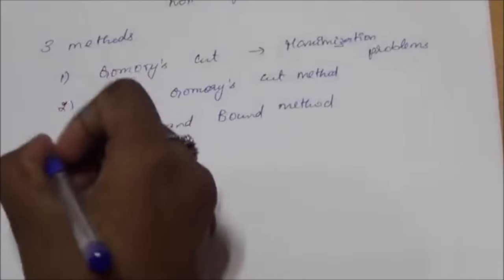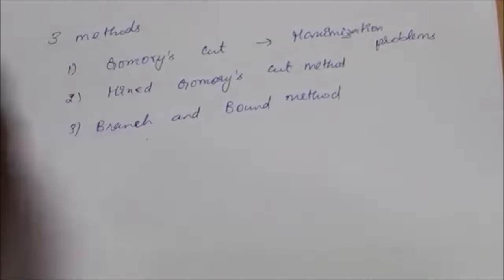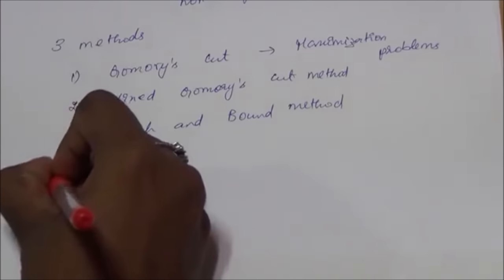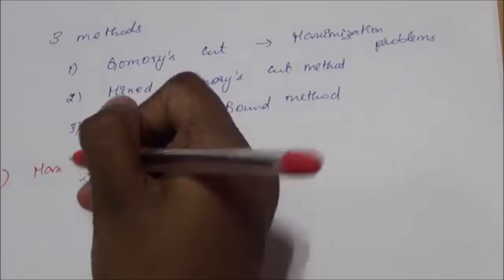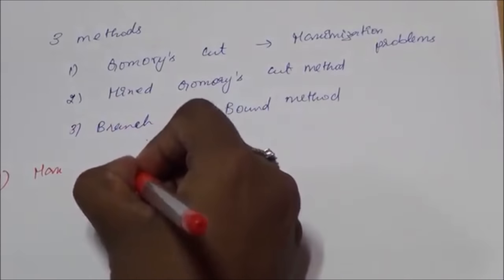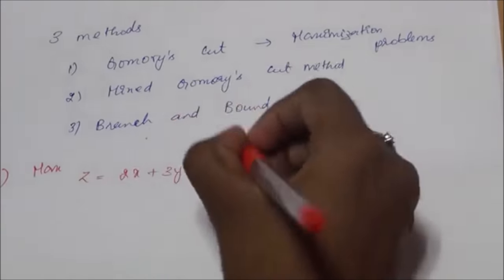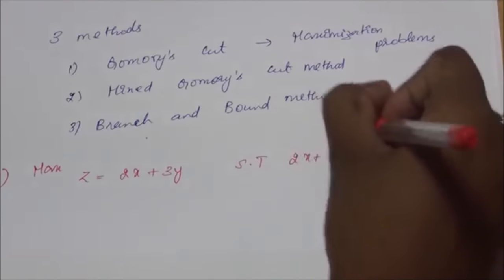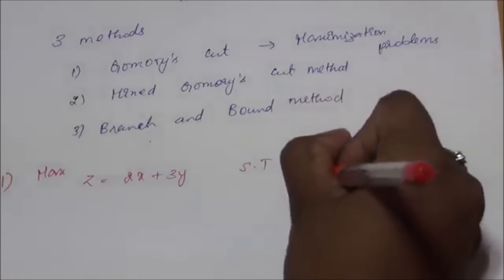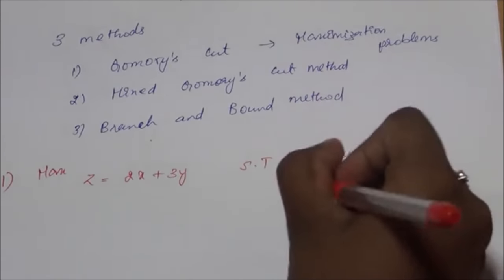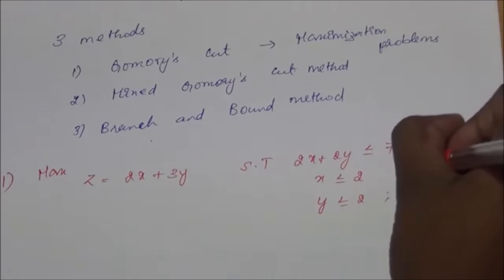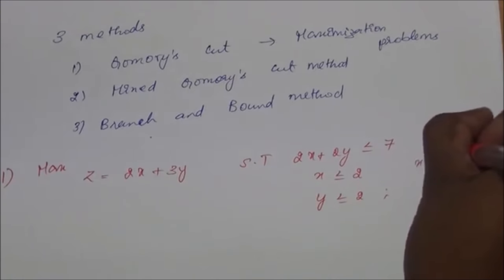Now let us solve an integer programming problem by Gomory's cut method. The problem given is maximization. The objective function is z = 2x + 3y, subject to constraints: 2x + 2y ≤ 7, x ≤ 2, and y ≤ 2, where the variables x and y are greater than or equal to 0 and they are integers.